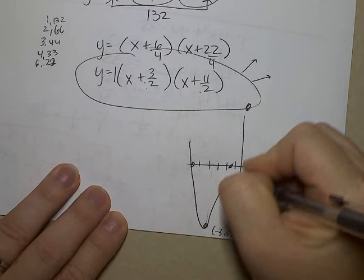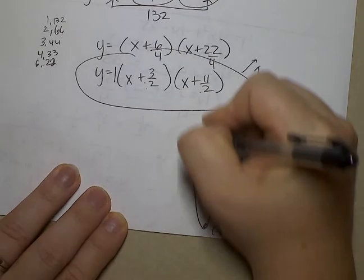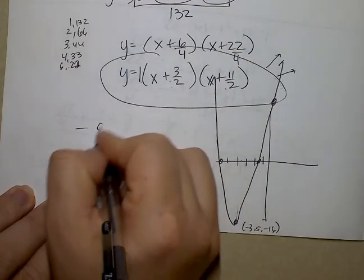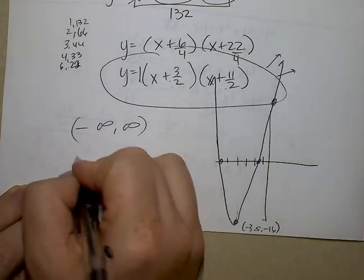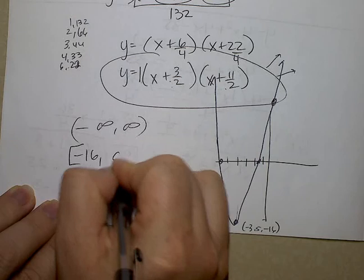And so somewhere way up there it crosses over. Okay, what is the domain? No restrictions going to the left or right. The range, it does go down as far as 16, but there's no restrictions as it goes up.